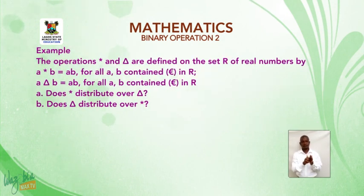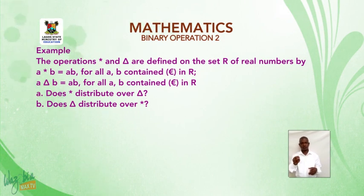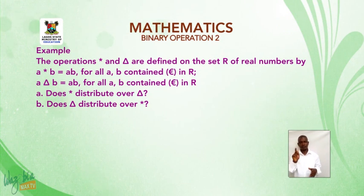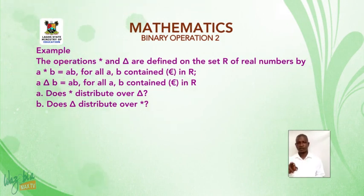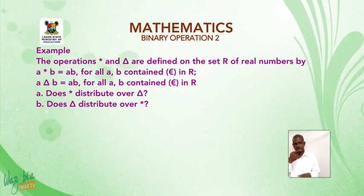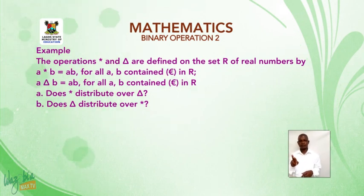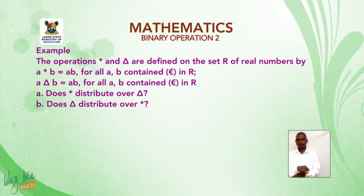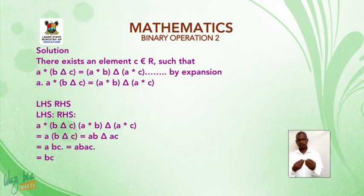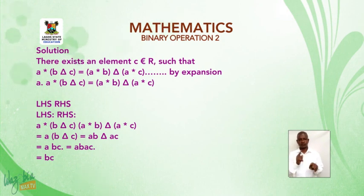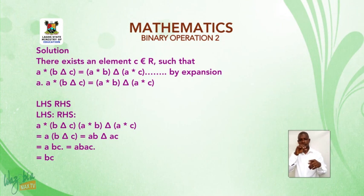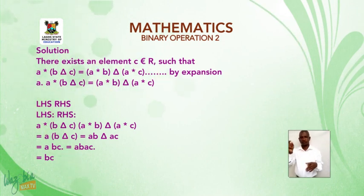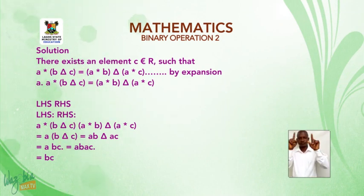For example, the operations star and delta (lambda) are defined on the set ℝ of real numbers by a★b = ab and a Δ b = a/b for all a, b contained in ℝ. There is an element c in ℝ such that a★(b Δ c) = (a★b) Δ (a★c) — we need to verify this by expansion.